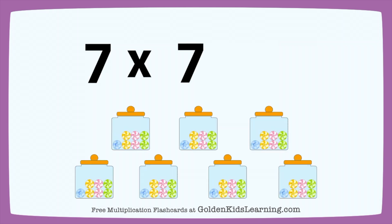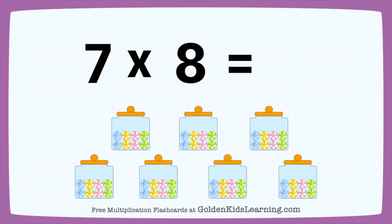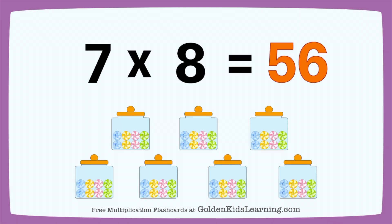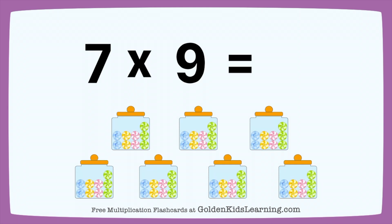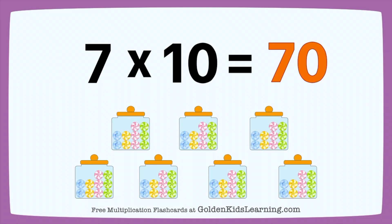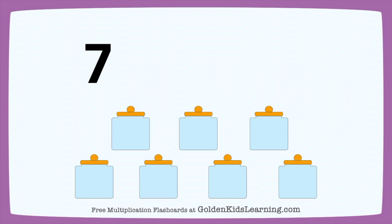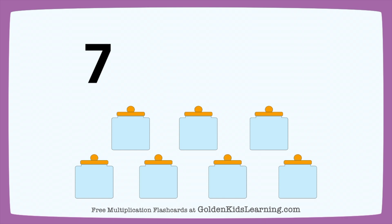7 times 6 equals 42. 7 times 7 equals 49. 7 times 8 equals 56. 7 times 9 equals 63. 7 times 10 equals 70. 7 times 11 equals 77. 7 times 12 equals 84.